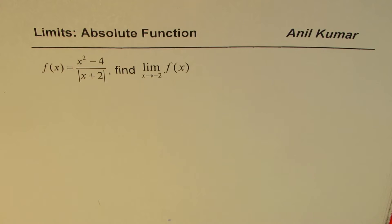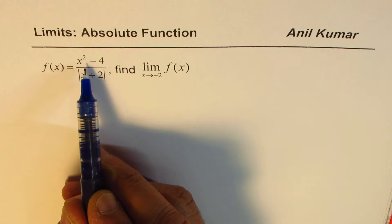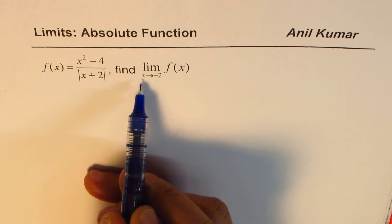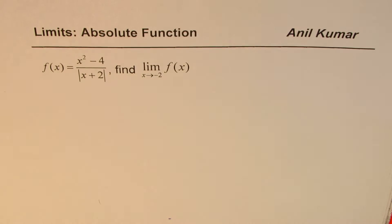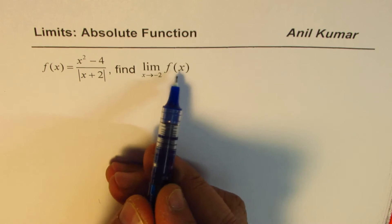I'm Adil Kumar and in this video we'll discuss an equation which has an absolute function in it and we'll also find the limit of this function. This question is from one of my subscribers: f(x) equals x squared minus 4 divided by the absolute value of x plus 2. Find the limit when x approaches minus 2. Let us first explore the function itself and then in the second part we'll find the limit.